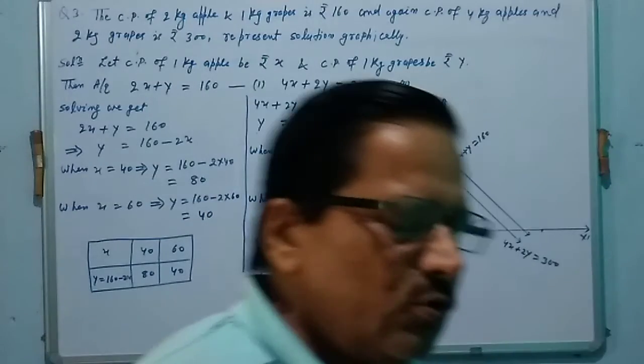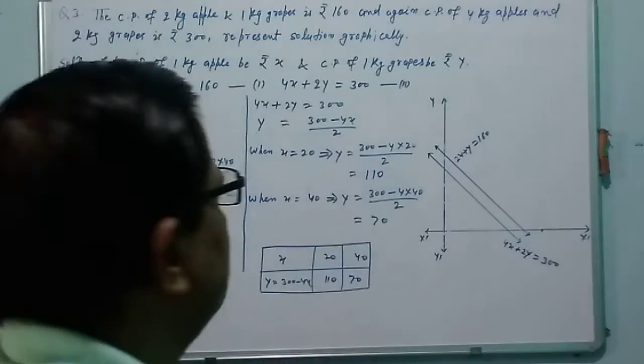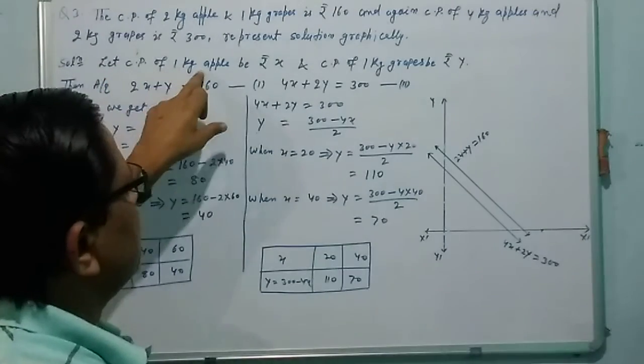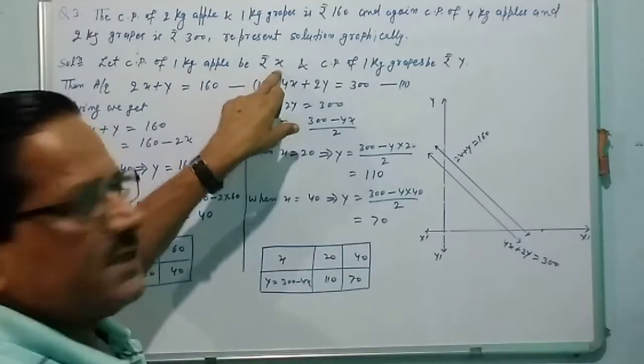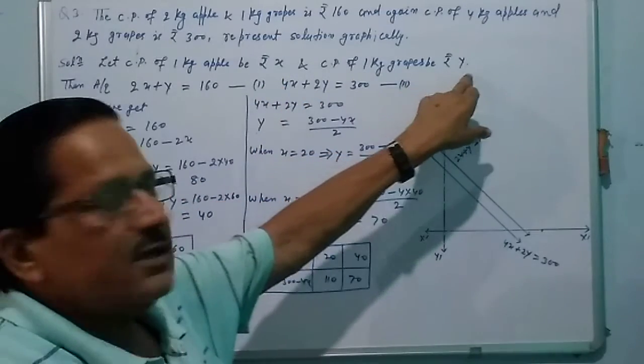Now we have to solve this question graphically. Let CP of 1 kg apple be Rs. X and CP of 1 kg grape be Rs. Y.